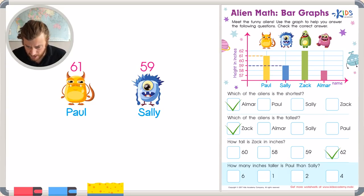The first strategy I'd like to look at is just counting up on the graph. So if we counted up from 59 to 60 and 61, we could see that there's one, two inches difference between Sally and Paul. Using this strategy, I can see that Sally is two inches shorter, meaning that Paul is two inches taller.